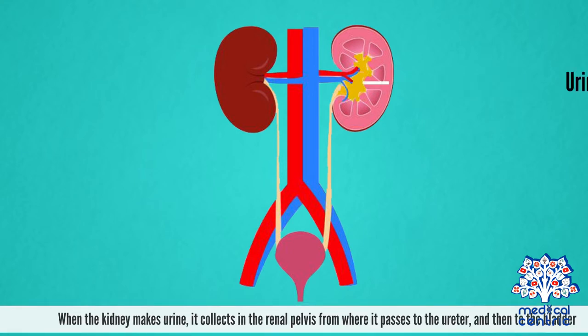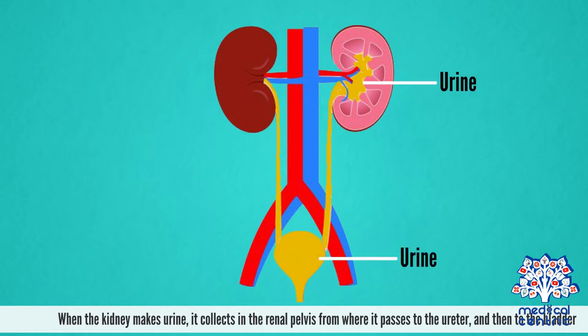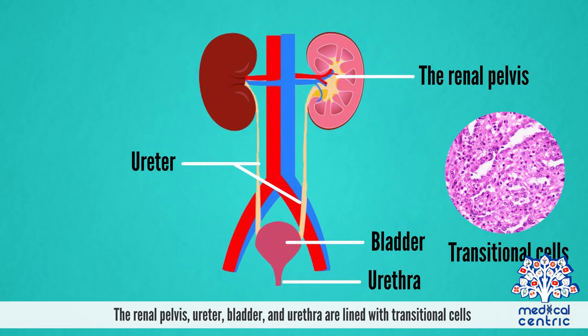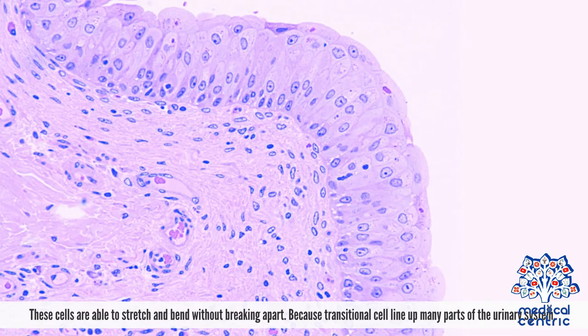When the kidney makes urine, it collects in the renal pelvis, from where it passes to the ureter, and then to the bladder. The renal pelvis, ureter, bladder, and urethra are lined with transitional cells. These cells are able to stretch and bend without breaking apart.